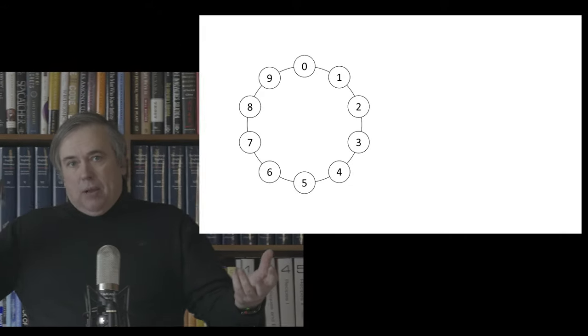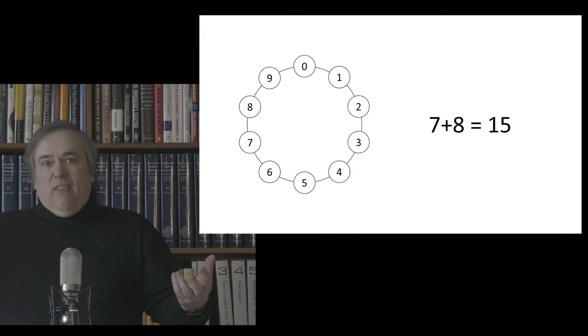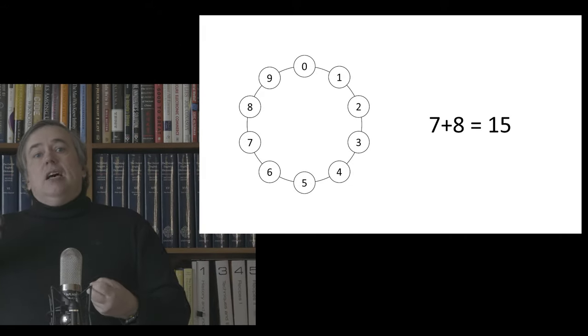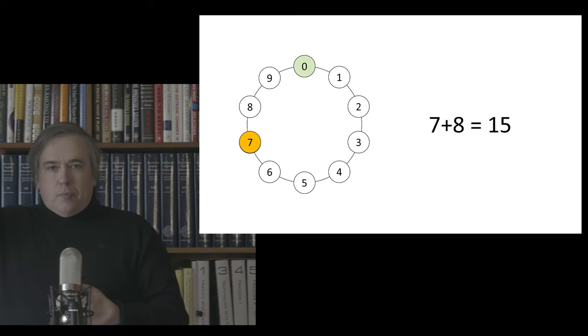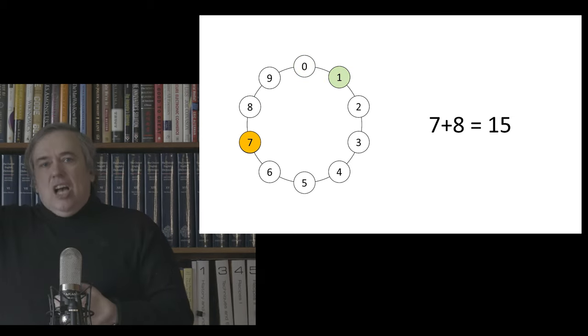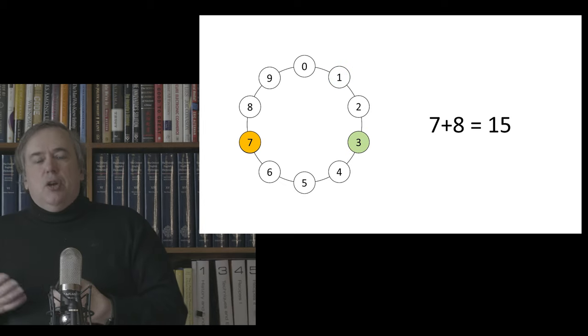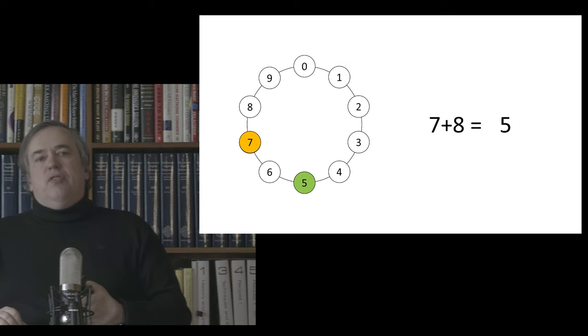If we're looking at a plus b mod 10, the result is just the last digit when we write it in decimal. So 15 mod 10 is 5, 37 mod 10 is 7, and 7 plus 8 mod 10 is simply 5. This circular notion is a very useful feature.